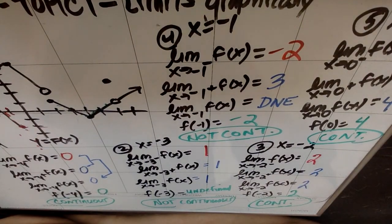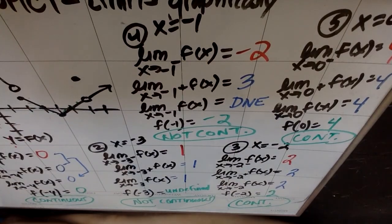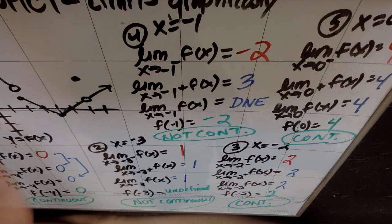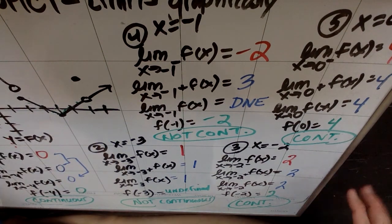So that's the first half of example one. I'm going to erase all of this and basically recreate it again with five more values. We're going to do the other half of this graph in the next video.